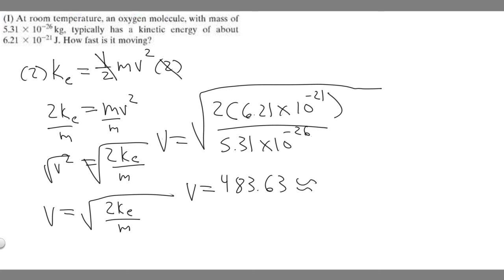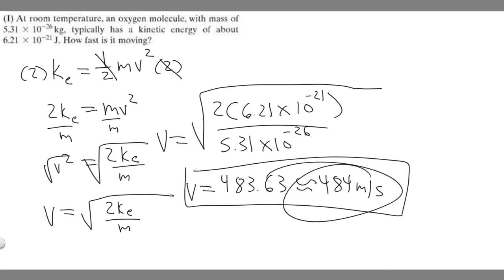I'm going to round it to 484. You can round it however your teacher wants you to, but it's going to be 484. Keep in mind the units are going to be in meters per second because we used kilograms and joules. So your answer to this problem is going to be 484 meters per second. Hopefully you found this useful.